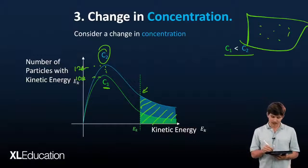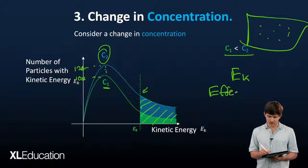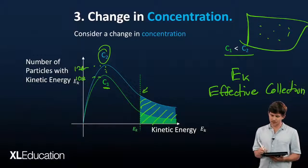This entire example means we've increased the number of particles with sufficient energy to go through an effective collision. They have sufficient EK to go through an effective collision, which means we can increase the rate of reaction.